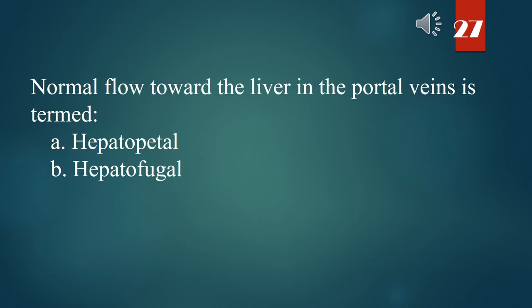Normal flow toward the liver in the portal veins is termed: A. Hepatopetal. B. Hepatofugal. The answer is A. Hepatopetal.